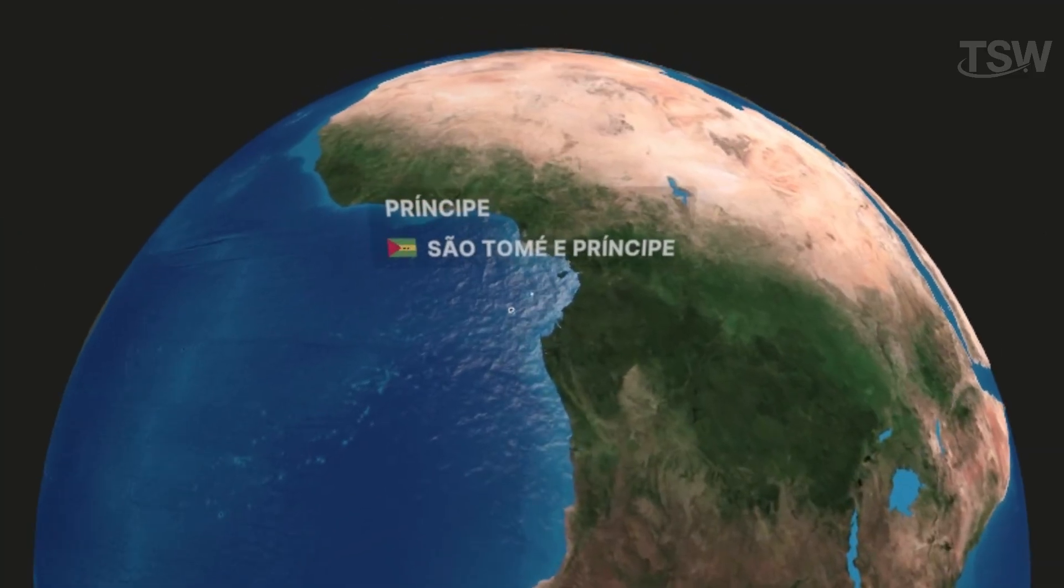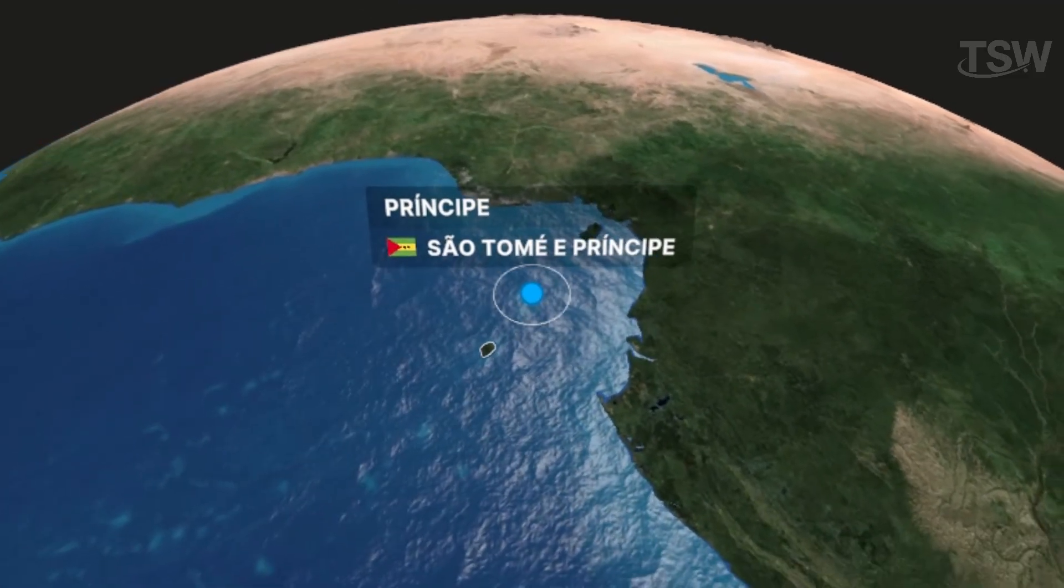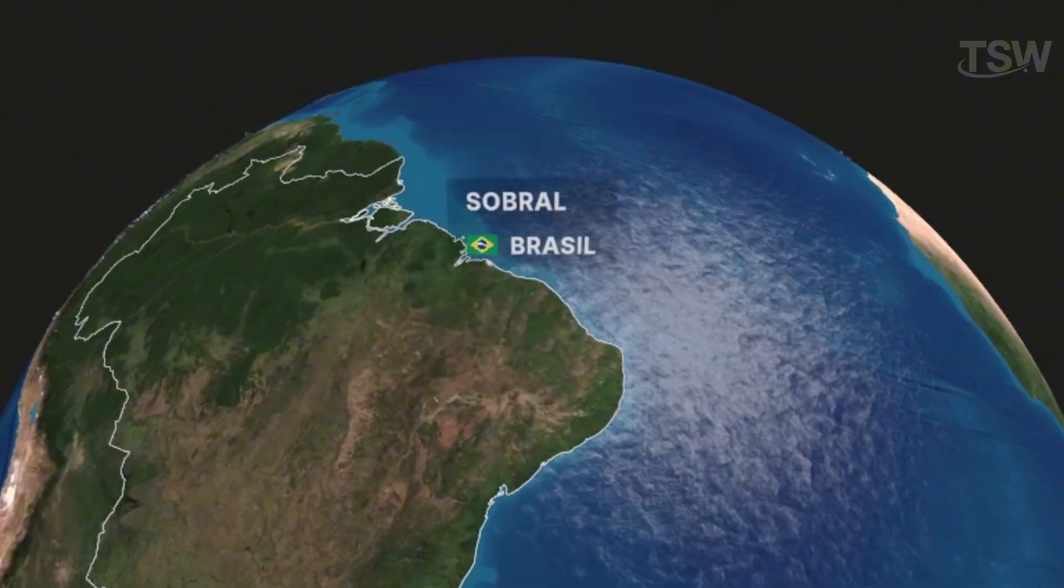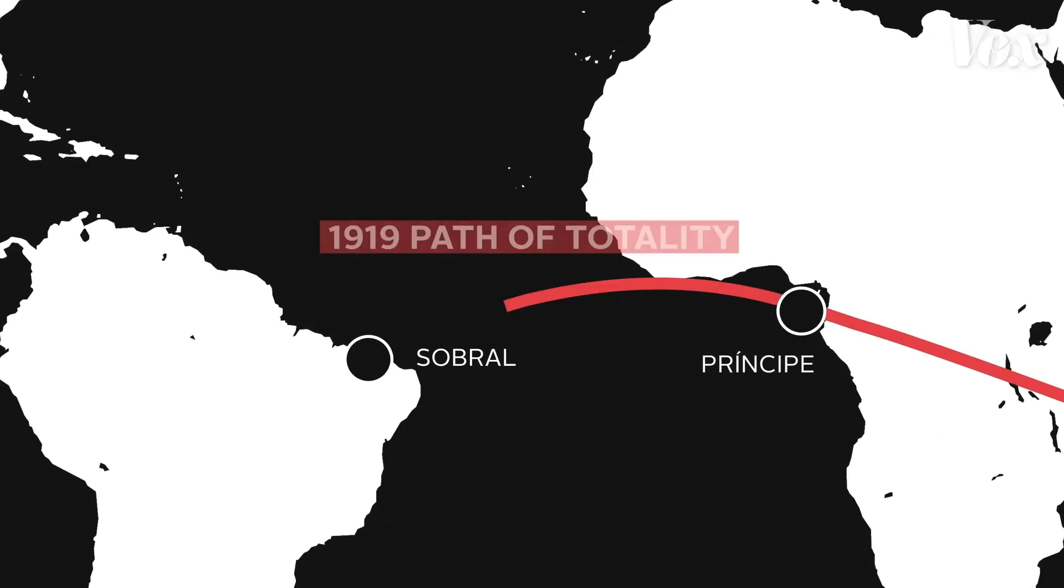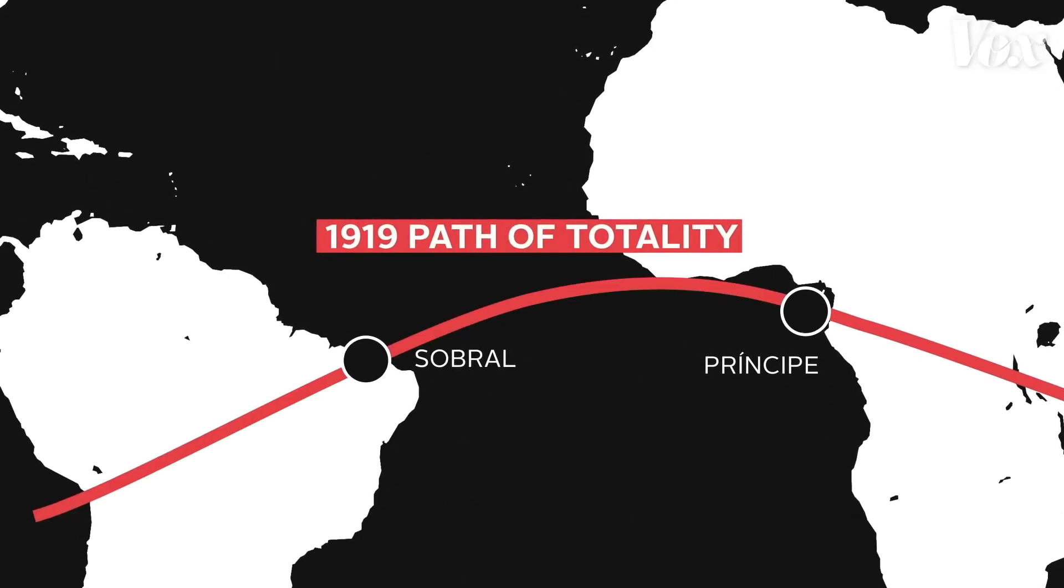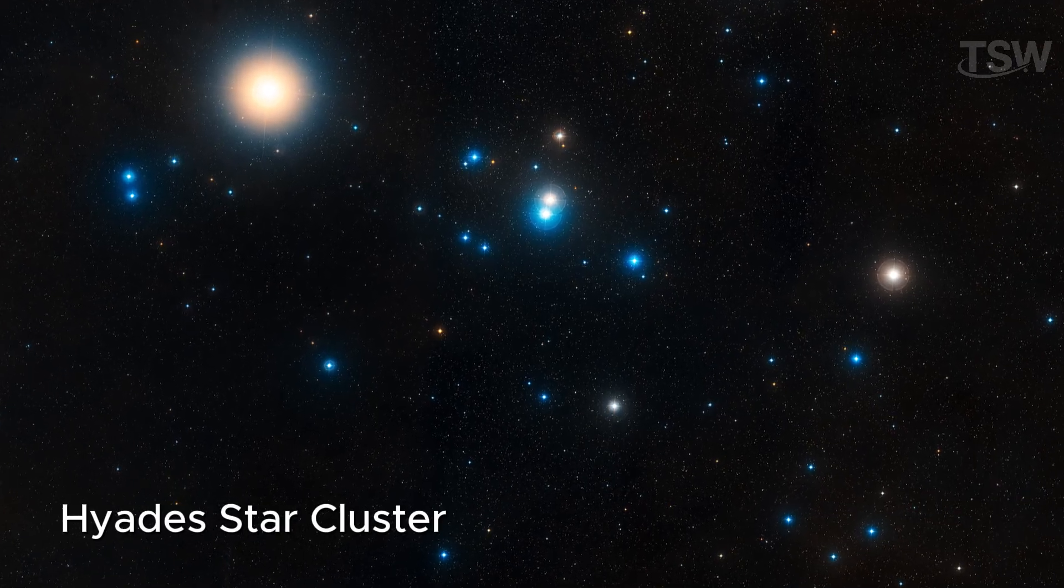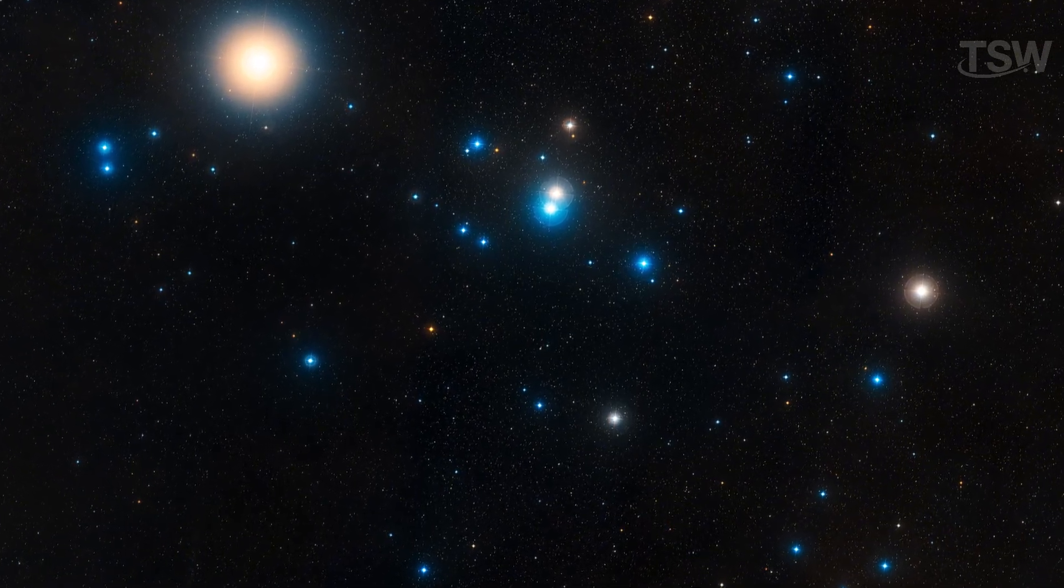One to the island of Principe, off the West African coast, and another to the inland city of Sobral, in the Brazilian state of Ceará. Sobral turned out to be the ideal location. At that time, the Sun was passing very close to the Hyades star cluster, a group of about 80 stars.